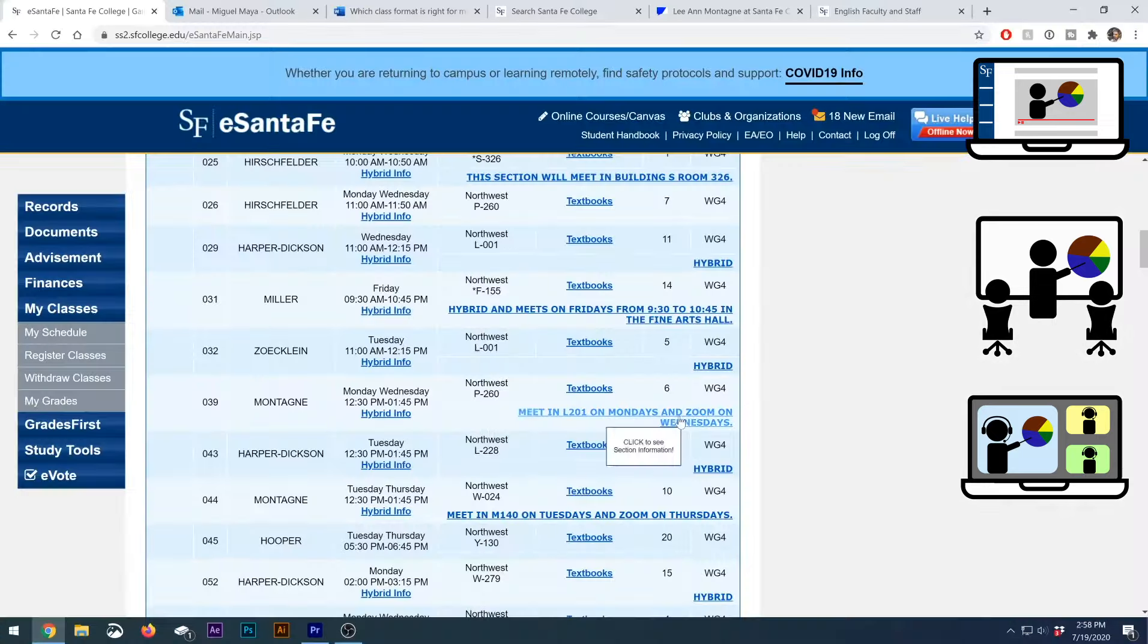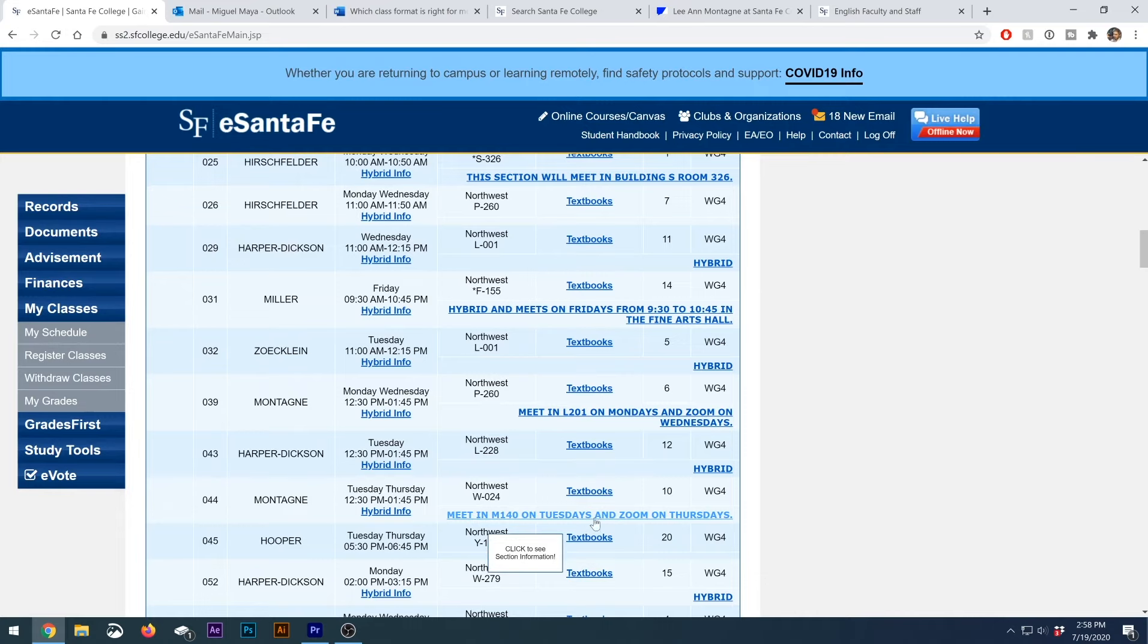And there are a few hybrids that combine some SF Online with some video conferencing and some in-person classes. These classes are going to say hybrid info, and they will show a combination of a physical location and a video conferencing platform like Teams or Zoom.